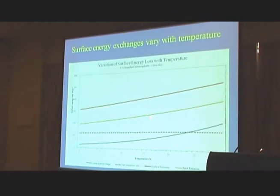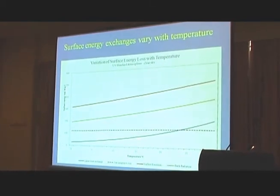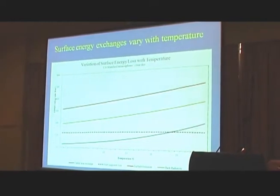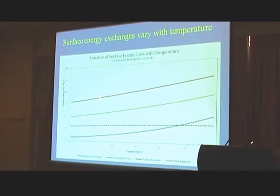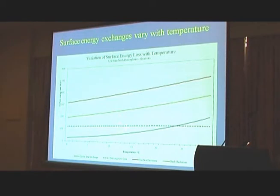Those three components of the Earth's energy balance that we looked at before — the surface emission, the back radiation, and the latent heat exchange — they all increase with temperature. By well-known laws: the back radiation and the surface emission by the Stefan-Boltzmann law, and the Clausius-Clapeyron relationship from the 1850s is the fundamental reason why evaporation increases. The important thing to note here, though, is the difference between these. The net energy loss from a surface doesn't really increase very much at all through these temperatures, because both of the radiation properties increase according to the fourth power of temperature — very closely linked. But the evaporation is quite independent; it in fact doubles every 10 degrees temperature rise.